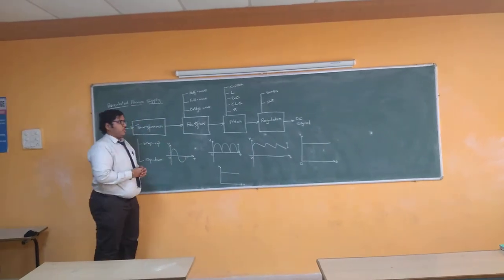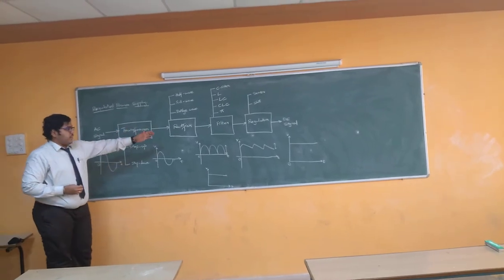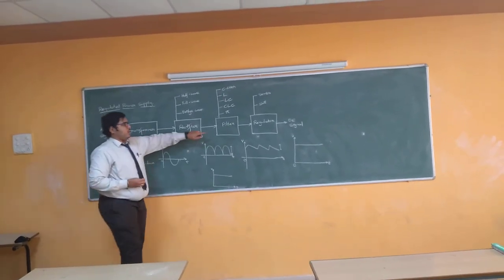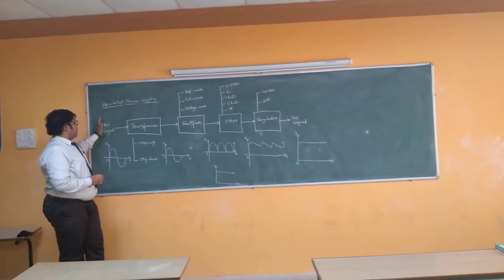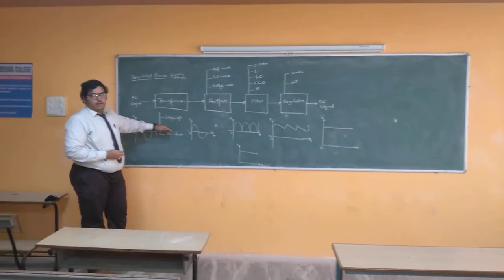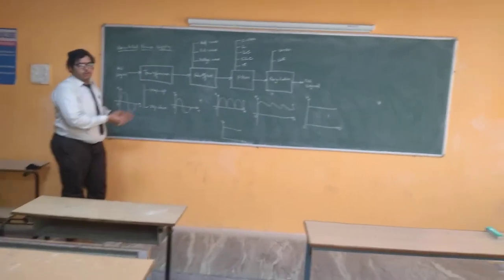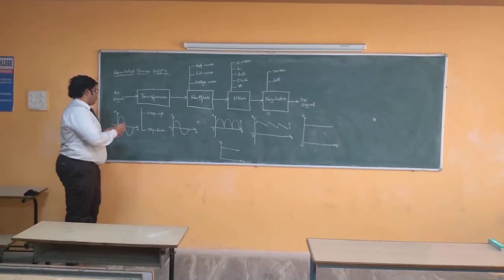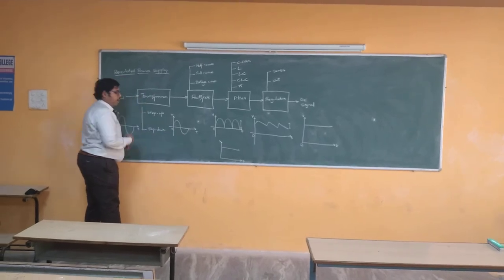Taking an overview of this particular signal, it is basically classified into four different blocks: a transformer block, rectifier block, filter block, as well as the regulator block. At first, the AC signal is given to a transformer, where the transformer is classified into two different types — a step-up transformer as well as a step-down transformer. The main operation is to decrease the voltage level of the AC signal.